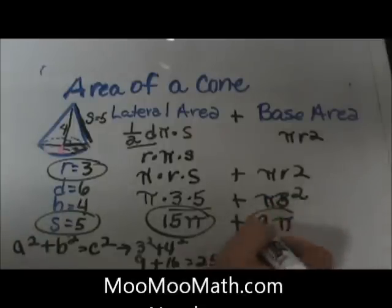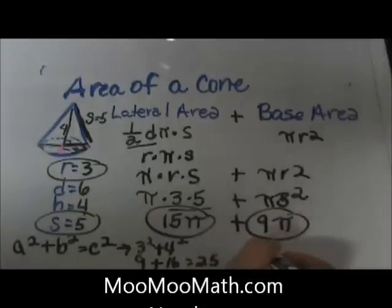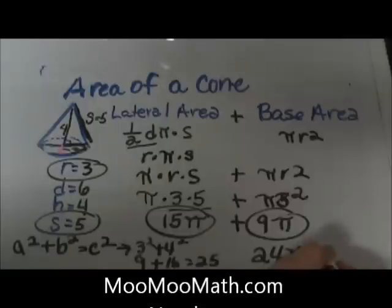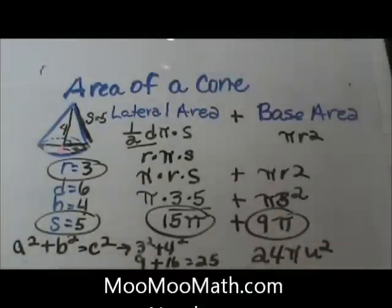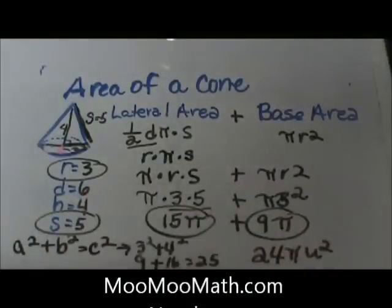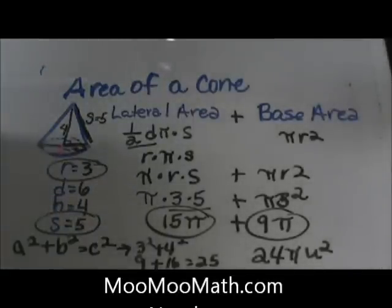So when I add those together I'm going to get 24π and because it is area it is going to be units squared. That is how you find the area of a cone.